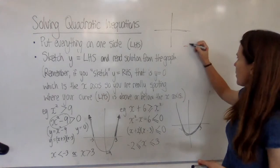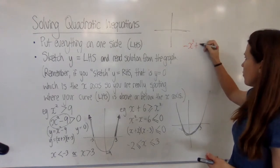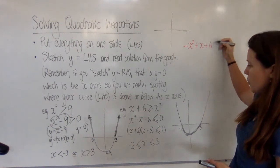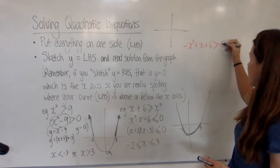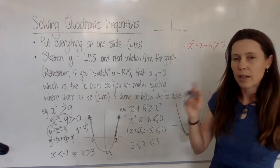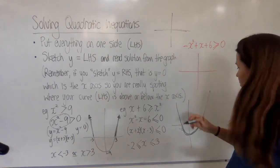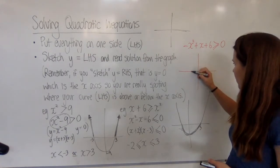We would have had minus x² plus x plus 6, and we would have had to say that all of that is greater than or equal to 0. Now what would have happened is when we'd graphed this, it would be an upside-down parabola, but guess which points it would be going through?